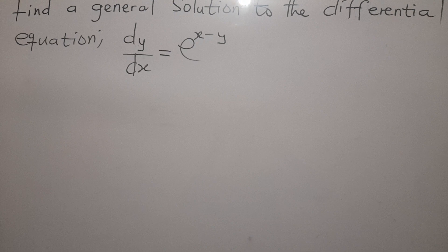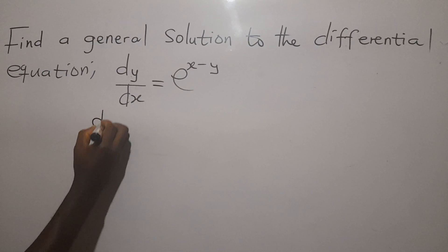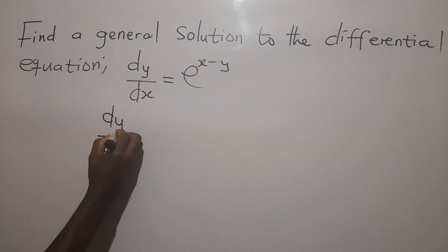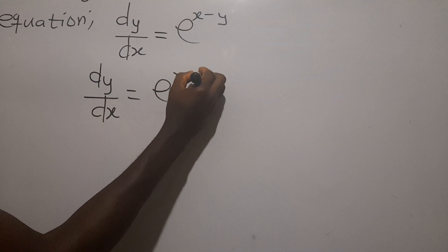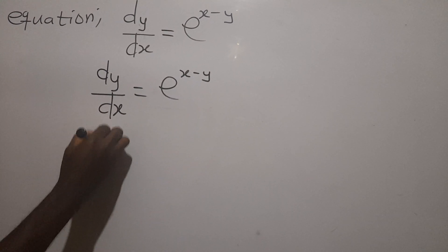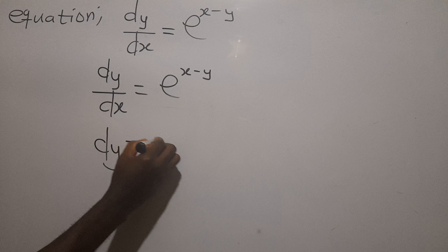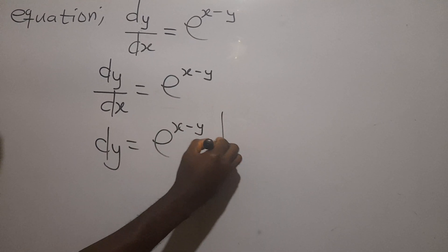So we'll find solution to this. dy over dx is equal to e exponent x minus y. So we can say that dy is equal to e exponent x minus y dx.